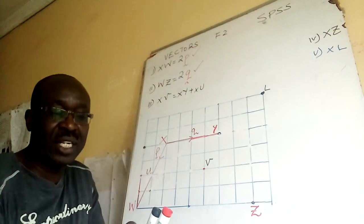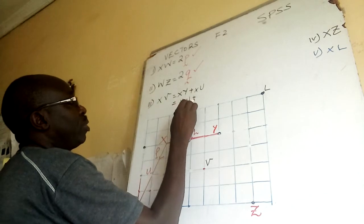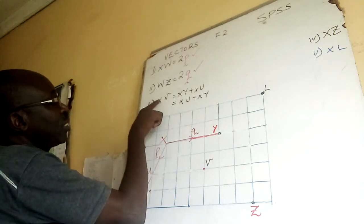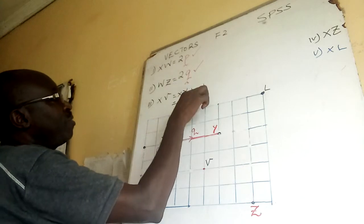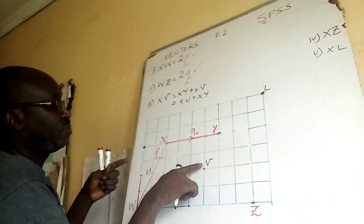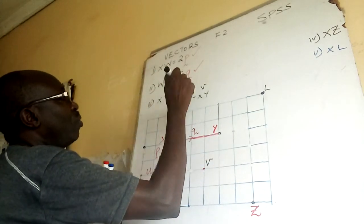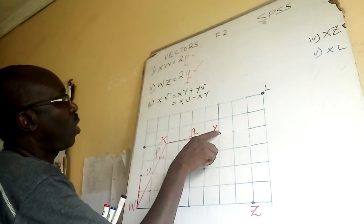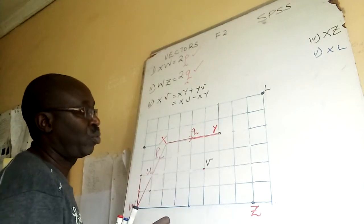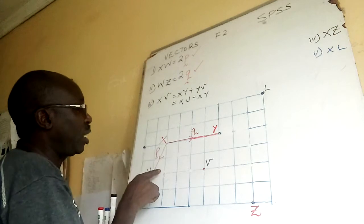They can say XV — route one: XY plus YV. Remember what I taught in lessons three and four: X is the first letter and V is the last letter. So XV route one is XY, and then YV. XY, and then you do the diagonal, which will be equivalent to XU. So YV is equivalent to XU.